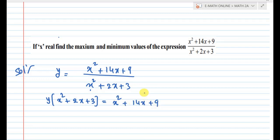y times (x squared plus 2x plus 3) equals x squared plus 14x plus 9. Multiply here then: y times x squared, y times 2x gives 2xy, y times 3 gives 3y, which equals x squared plus 14x plus 9.